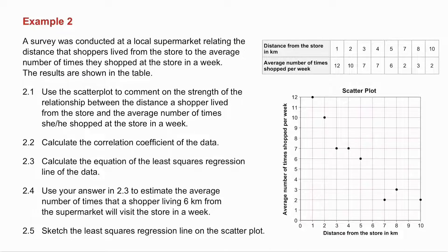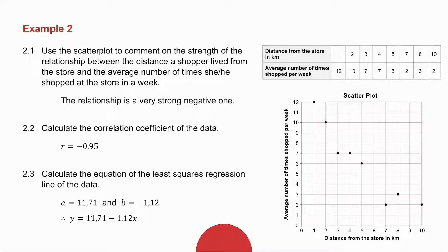2.5 asks you to use the scatterplot to comment on the strength of the relationship. Well, if you have a look, if you were to draw a line of best fit, it would look something like that. How close are the points to the line? They're very close to the line, which means the relationship is very strong, negative, because the gradient of that line is a negative gradient.